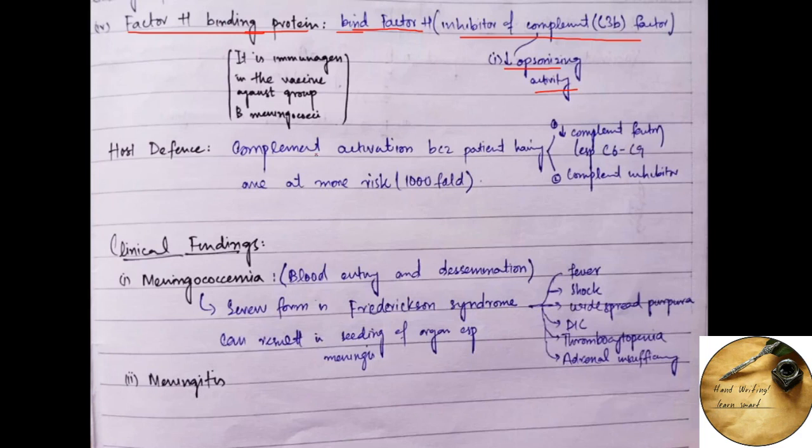This Factor H binding protein can be used as an immunogen in the vaccine against the group B meningococcus in which the capsular polysaccharide is non-immunogenic, non-antigenic.